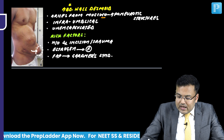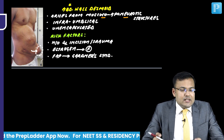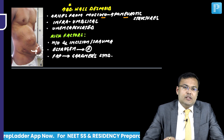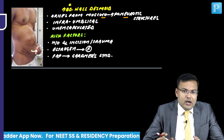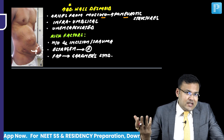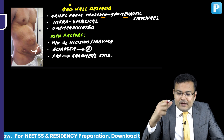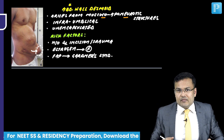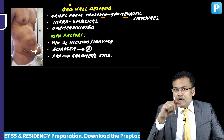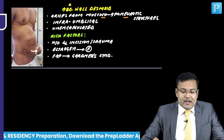Since this tumour arises from musculo-aponeurotic structures, it behaves like a soft tissue sarcoma. However, there are important differences: in desmoid tumour, there is no sarcomatous change and no distant metastasis. What is seen instead is infiltration of the surrounding muscle, which leads to an increased risk of local recurrence, especially when a wide margin is not taken during excision.